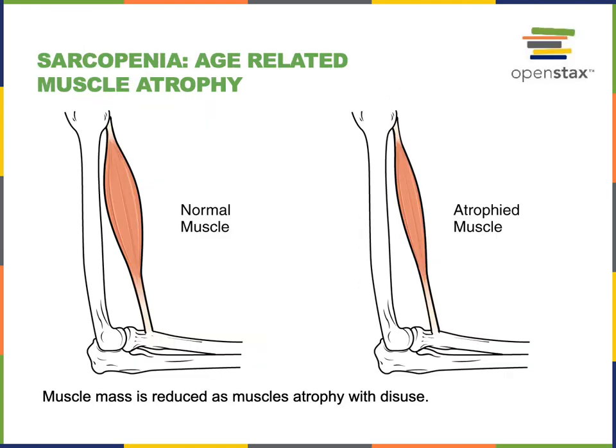In contrast to hypertrophy and hyperplasia, which increase muscle mass, atrophy is a mechanism that leads to decreased muscle mass. Atrophy is a decline in the mass of a tissue and can result from loss of use — if you don't exercise your muscles, they will atrophy. Sarcopenia is a specific type of atrophy; it is normal age-related muscle atrophy.